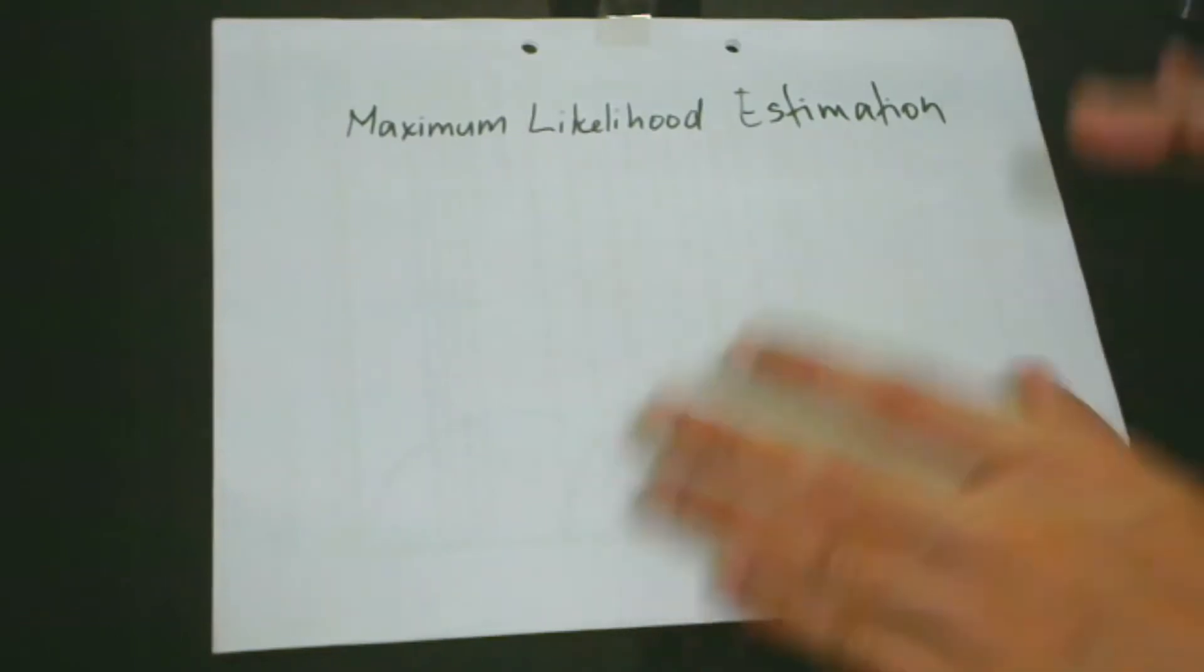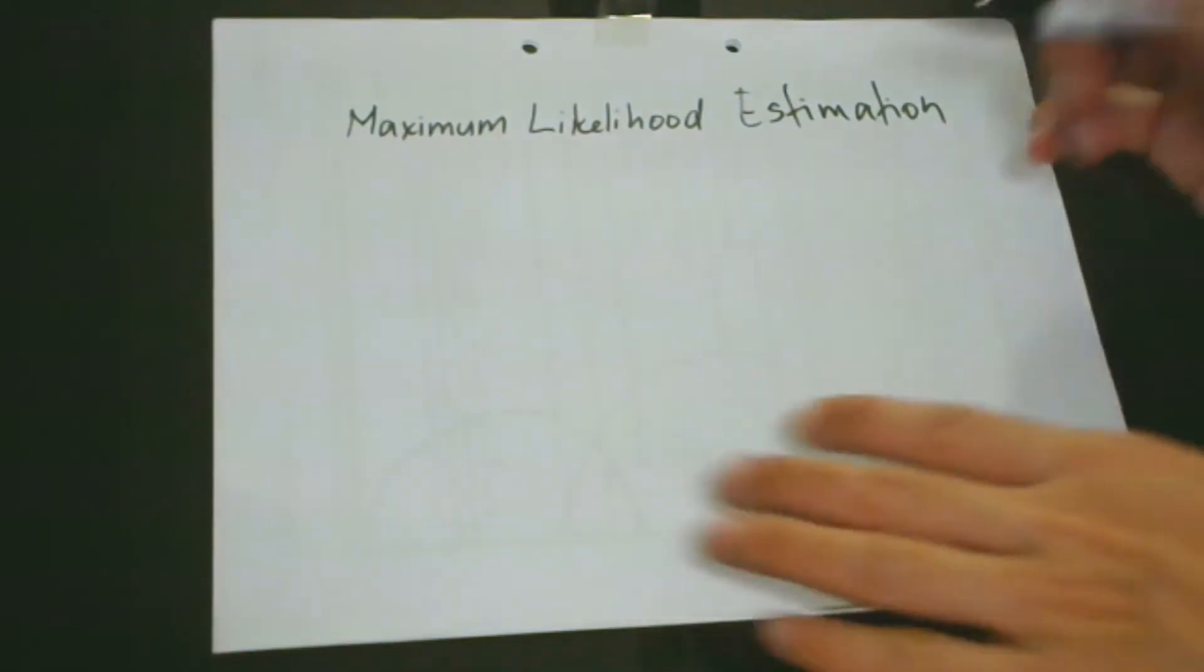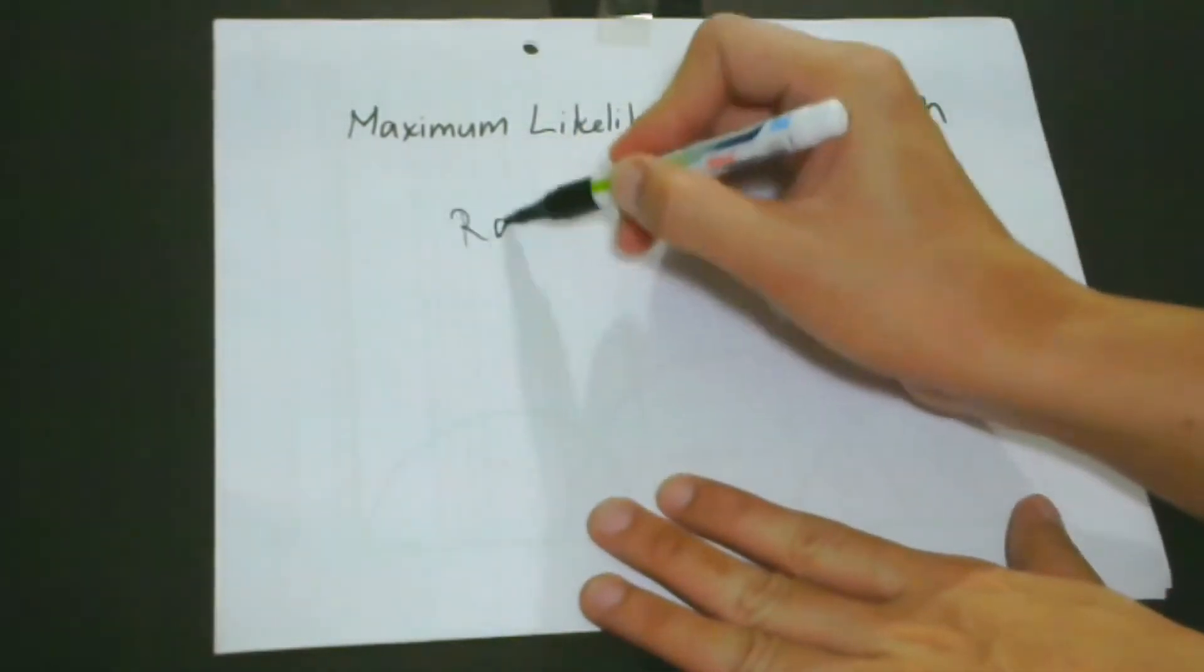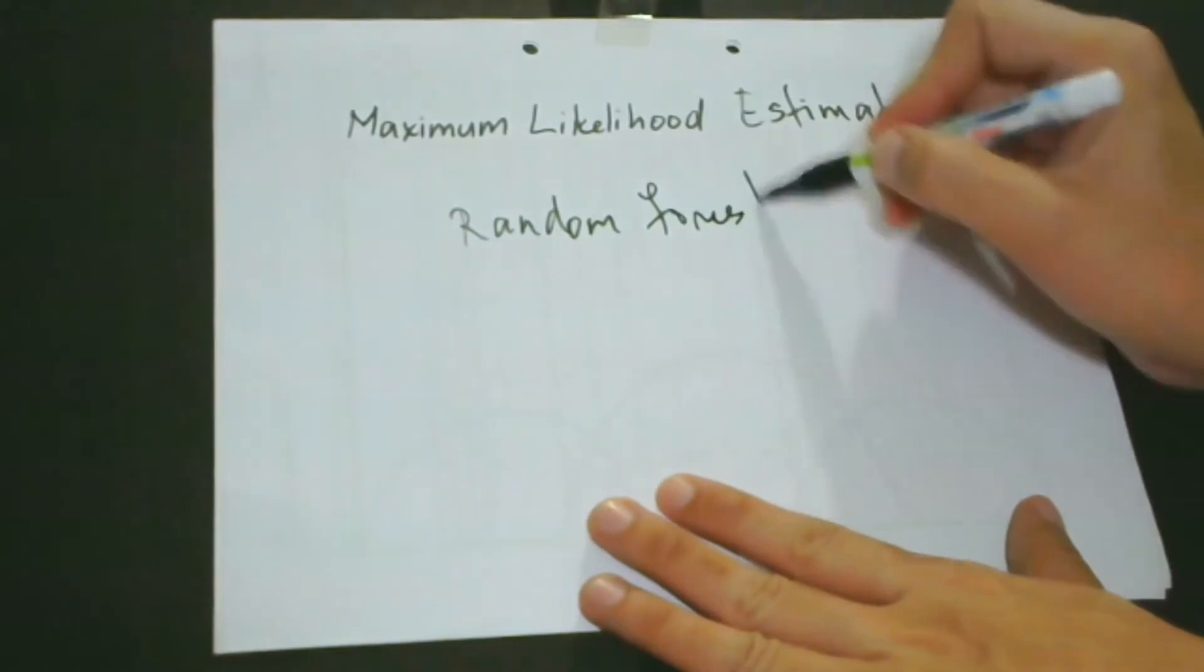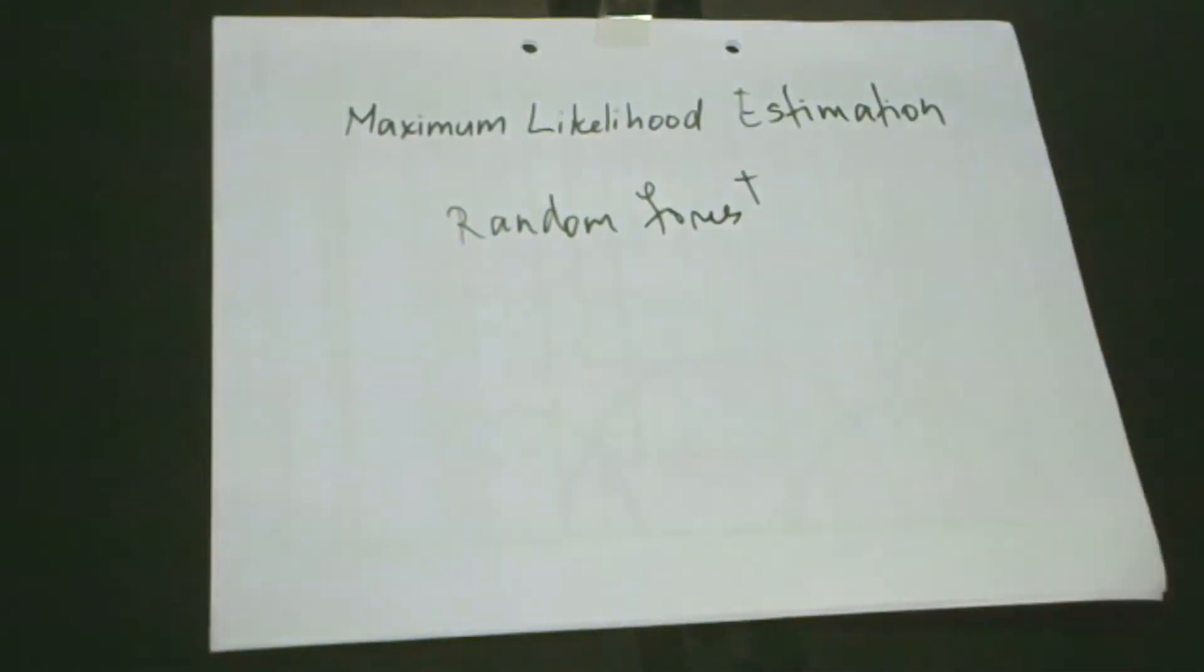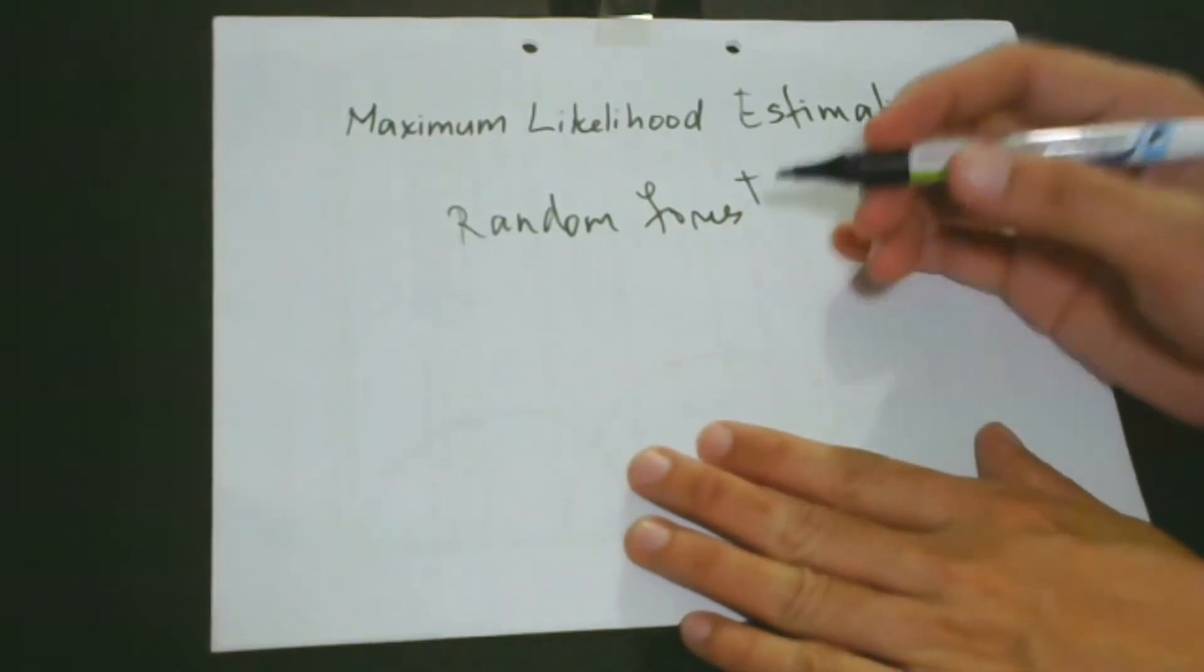We have actually a lot of models for different purposes. For example, we have random forest, which is used if we would like to make classifications. For example, if we would like to know whether or not a certain customer would like to cancel a certain subscription.